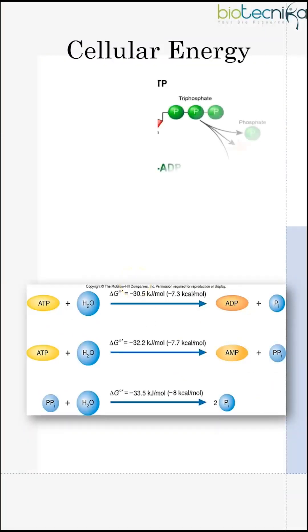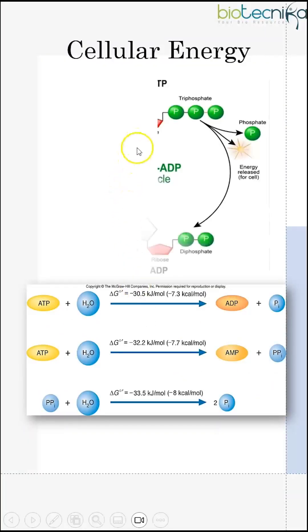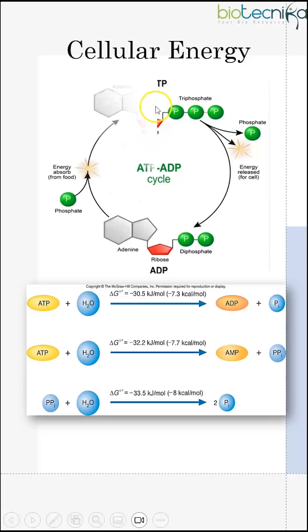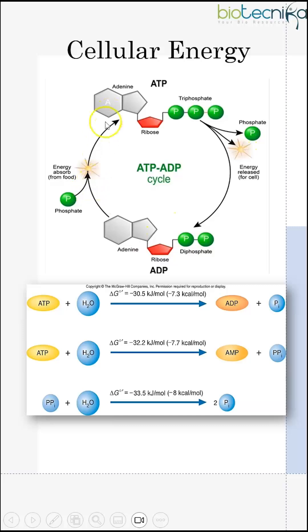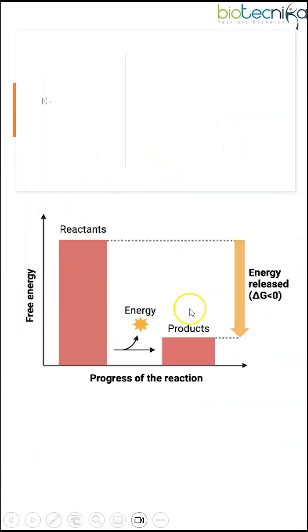Cellular energy: ATP is the energy currency of the cell. It hydrolyzes to release inorganic phosphate and ADP, which can then absorb one more phosphate and convert back into ATP to complete the cycle.